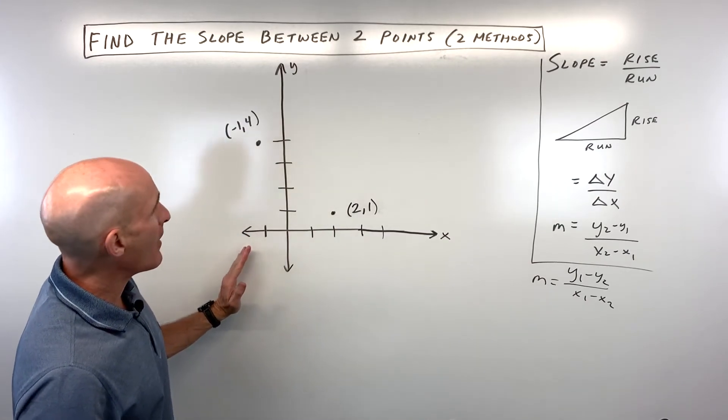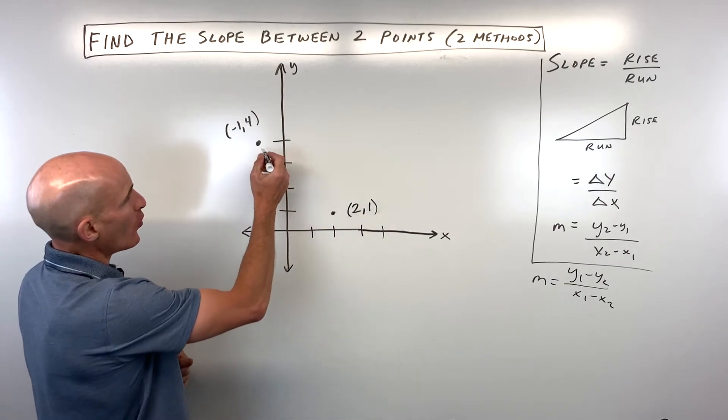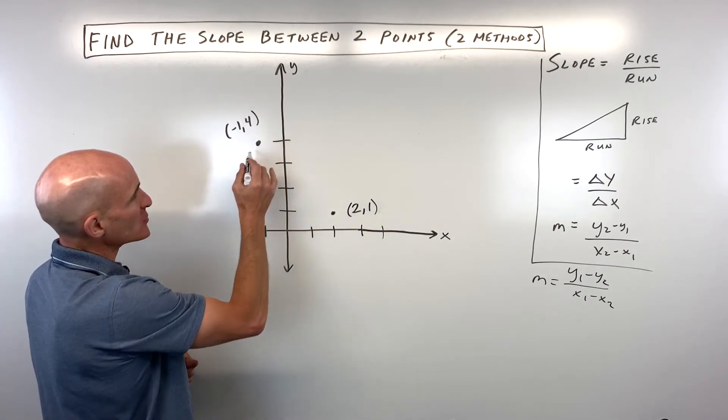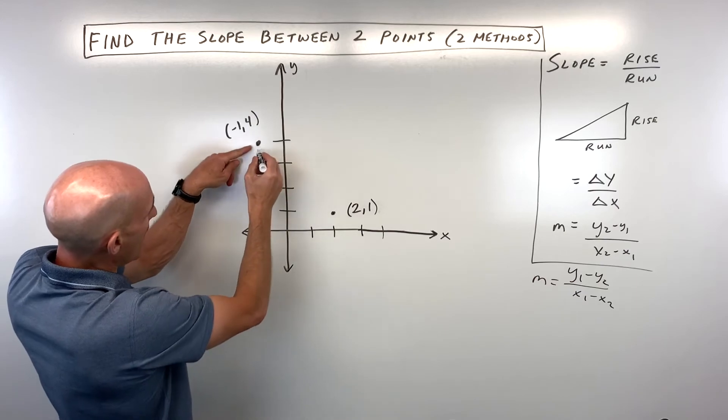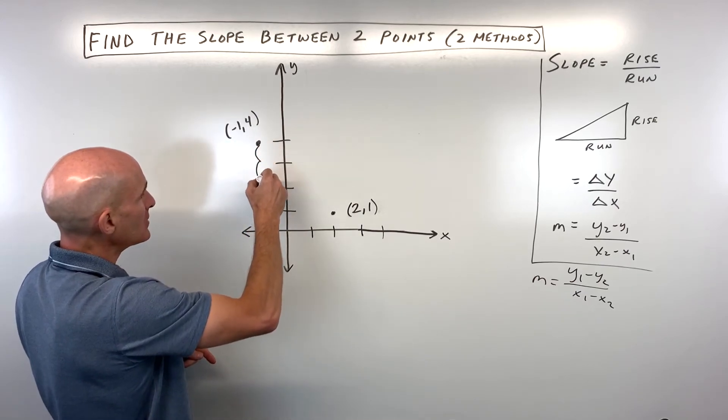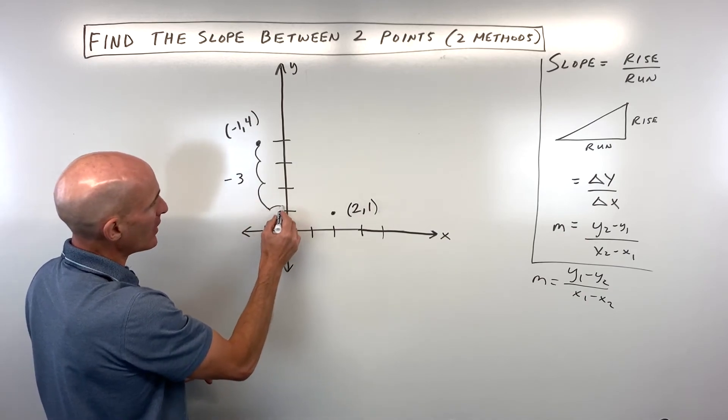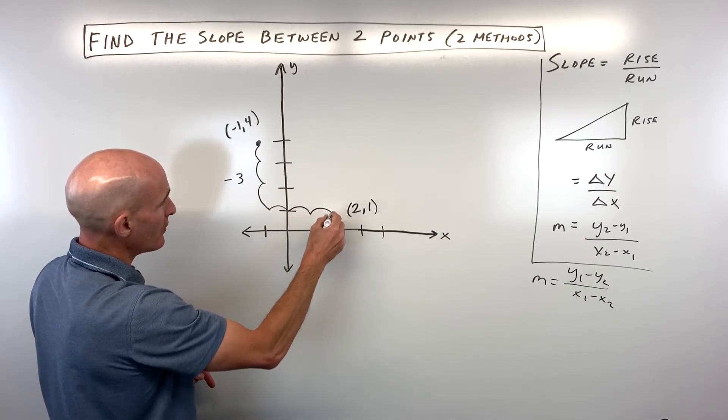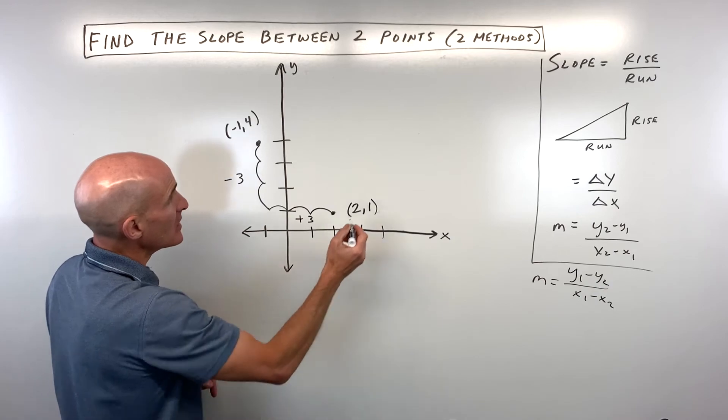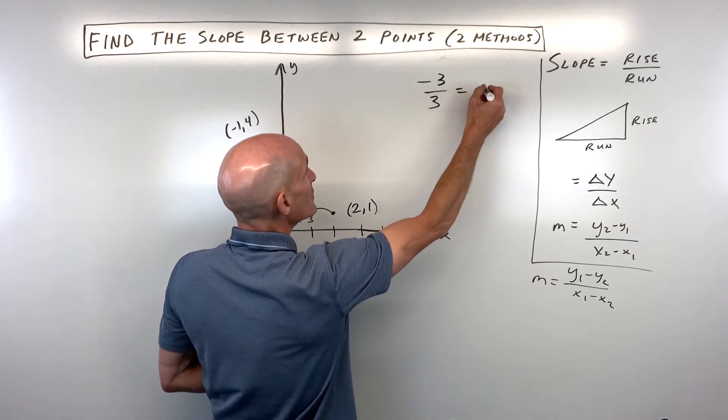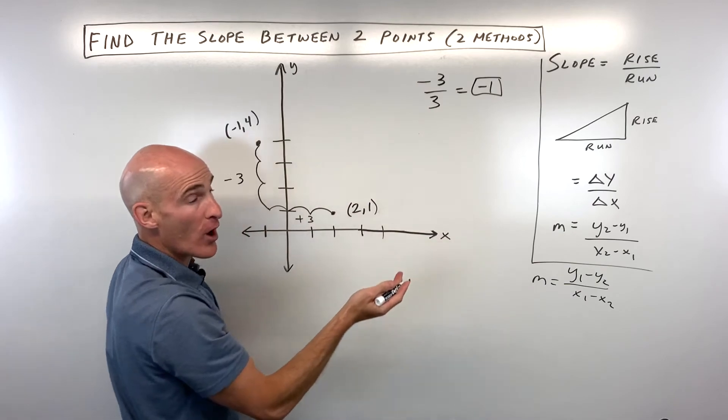If I was going to do this problem, I'm going to do it both ways. I'm going to do it one way using the rise over run. From here I'm going to do a rise of down 1, 2, 3. That's down, negative 3. I'm going to go right 1, 2, 3. That's positive 3. So the rise is negative 3, the run is positive 3. That comes out to a slope of negative 1.